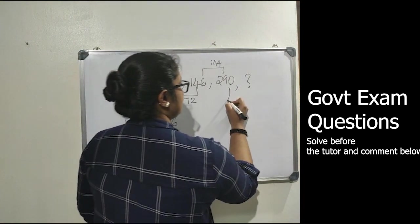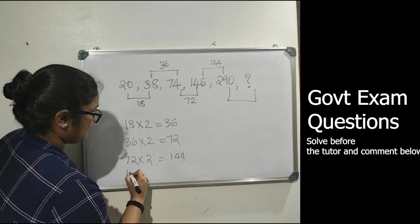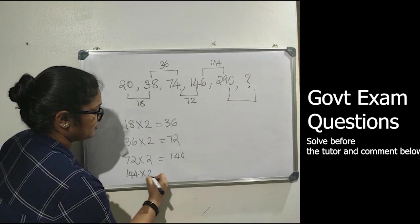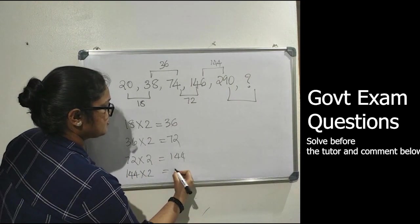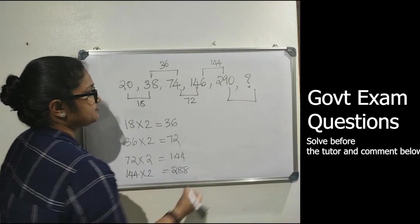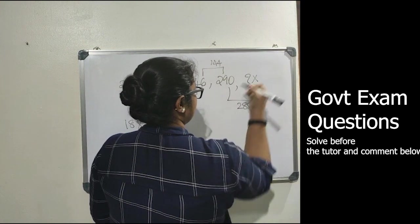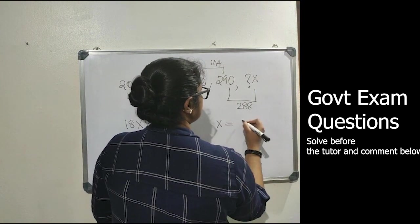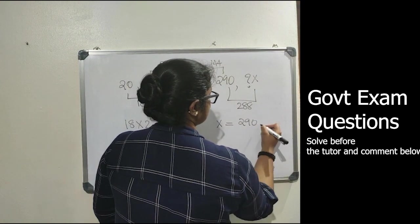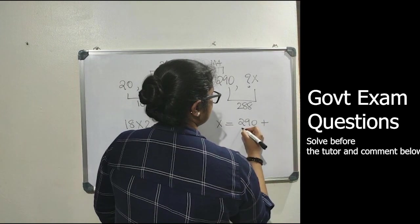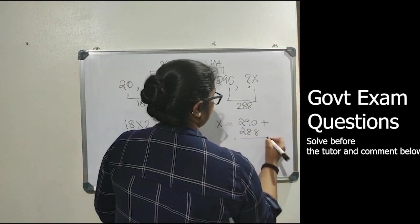The next difference is 144. Now we know that 18 into 2 equals 36, 36 into 2 equals 72, 72 into 2 equals 144. So definitely next difference will be 144 into 2, that equals 288. That means the value of x equals 290 plus 288.